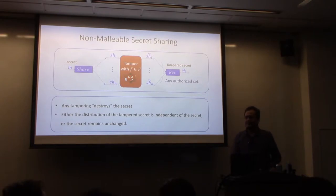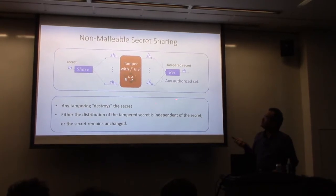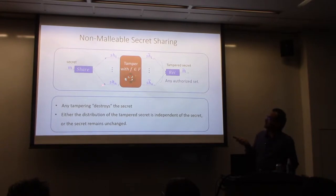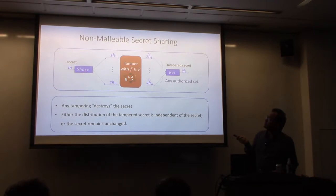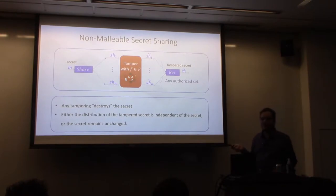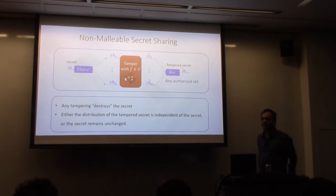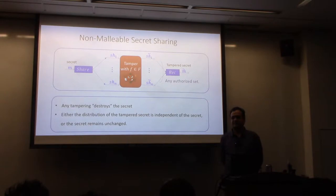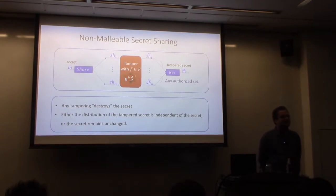Why can't this be solved with signatures? There is no secret key here — essentially no cryptography throughout the talk. The problem is: where would you store the secret key? If the share and reconstruction algorithms share a secret key, that could work, but we are not assuming that. The verification key, wherever it is stored, could also be tampered with, so the checking procedure would not give the right answer. If you use an error-correcting code rather than just a detecting code, even if tampered, you can get back the correct message — and that notion is already automatically implied.